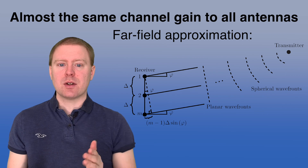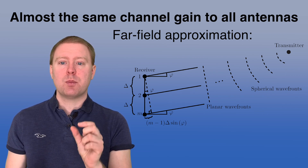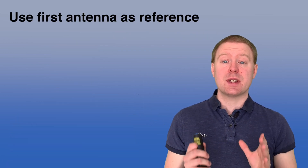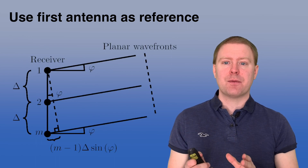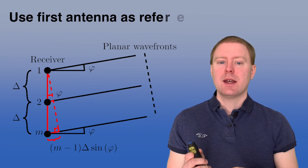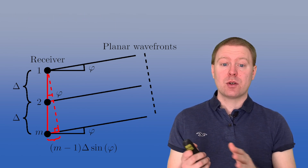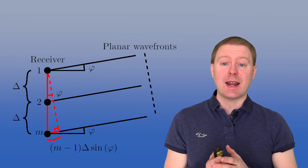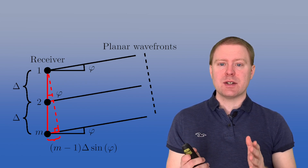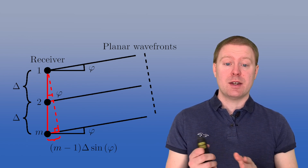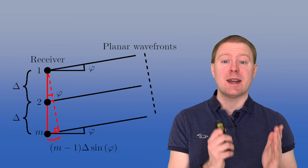However, when we sample the signals we still have small time delays, which turn into phase differences. Using the first antenna as reference, we compute the phase difference between it and the other antennas using a triangle. Between antenna one and antenna M, we have an additional propagation distance of (M minus one) times delta times the sine of phi, which can be positive or negative.